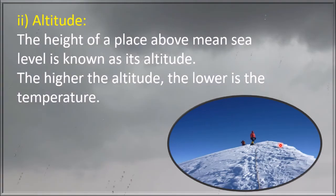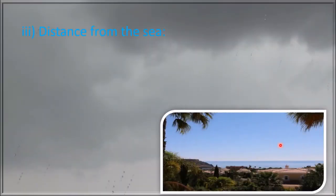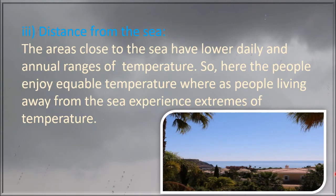The third factor is the distance from the sea. The areas close to the sea have lower daily and annual ranges of temperature, so the people there enjoy equable temperature. Whereas people living away from the sea experience extremes of temperature. For example, the summers are hotter in Delhi than in Mumbai.